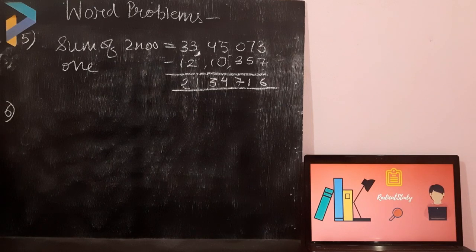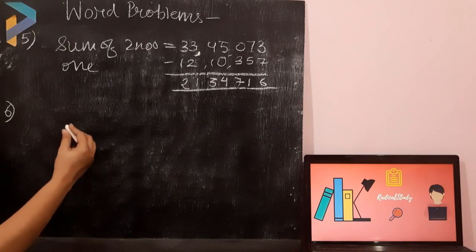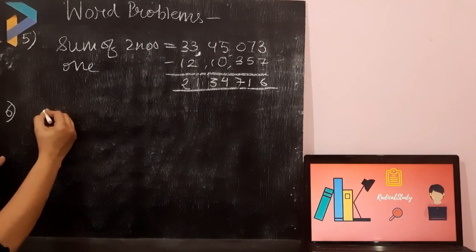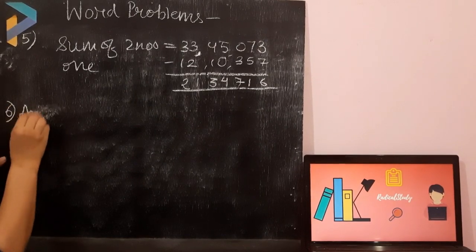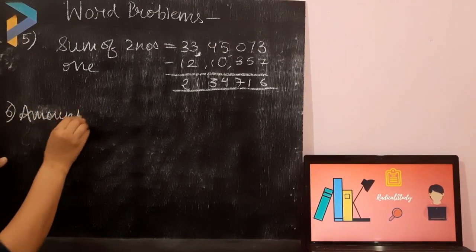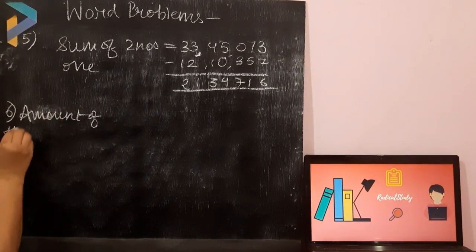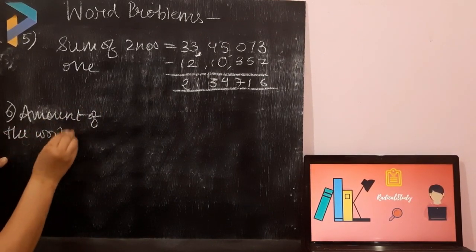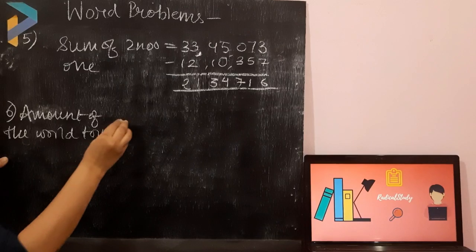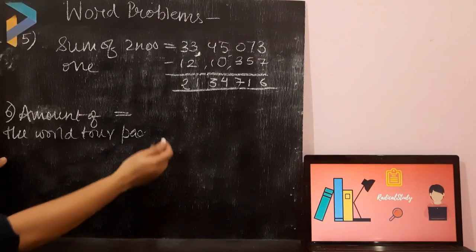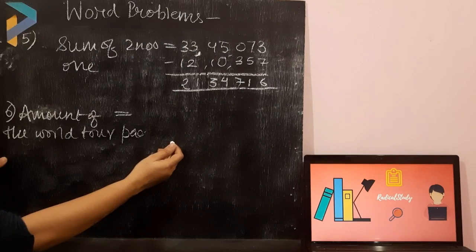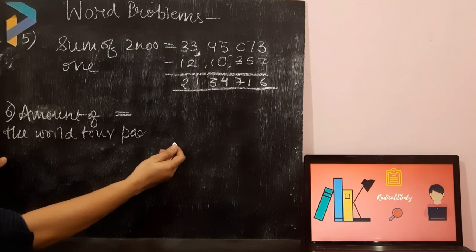Firstly, I will read the question. Rohit booked a world tour package for rupees 10,51,625. Here is your first statement. Amount of the world tour package. What is the amount? It is 10,51,625.